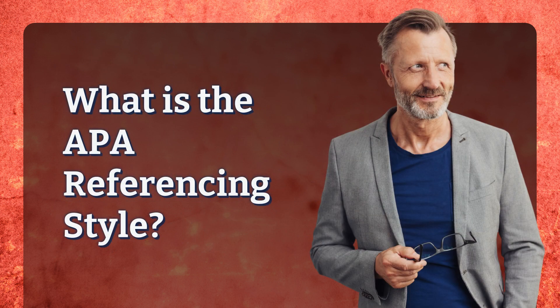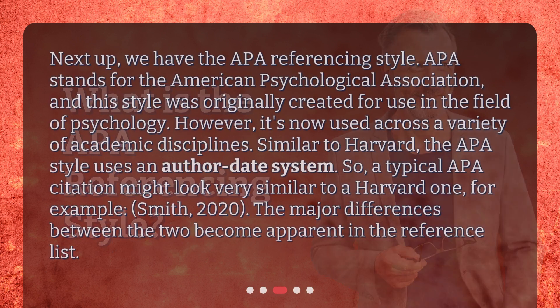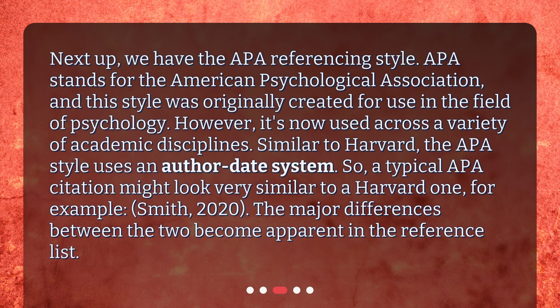What is the APA referencing style? Next up, we have the APA referencing style. APA stands for the American Psychological Association, and this style was originally created for use in the field of psychology. However, it's now used across a variety of academic disciplines. Similar to Harvard, the APA style uses an author-date system. So a typical APA citation might look very similar to a Harvard one — for example, Smith, 2020.